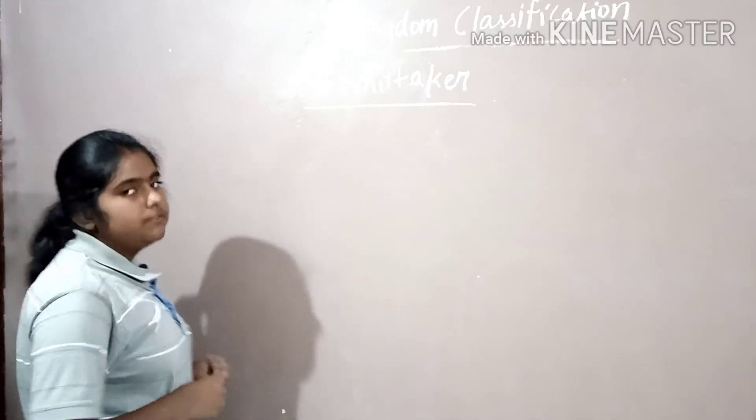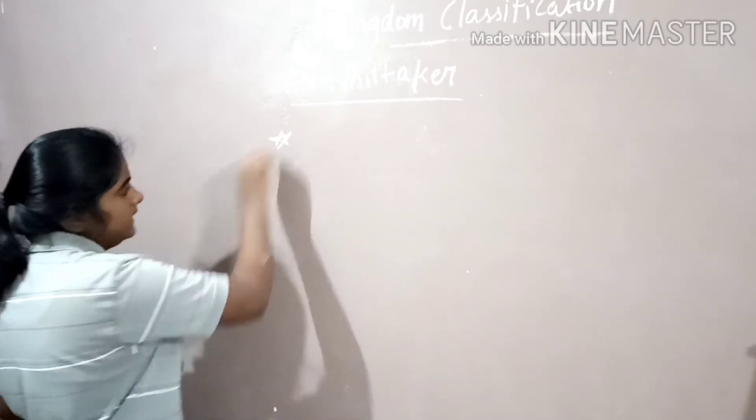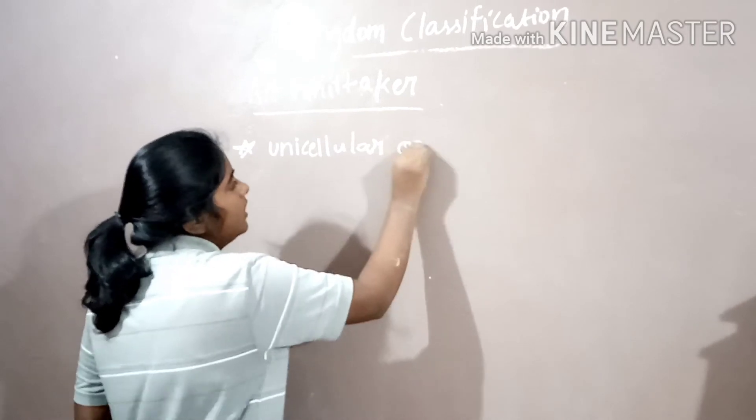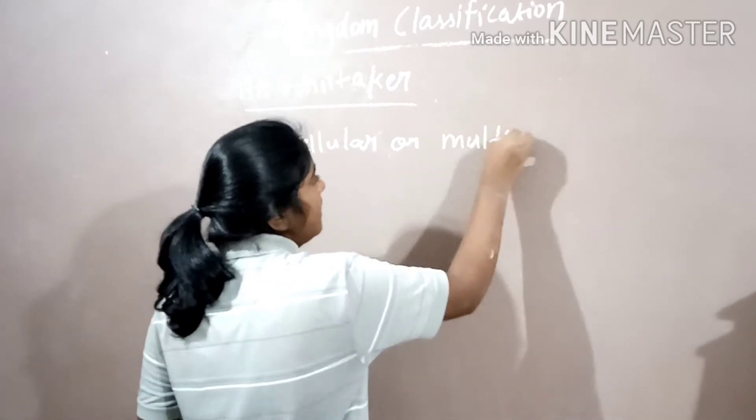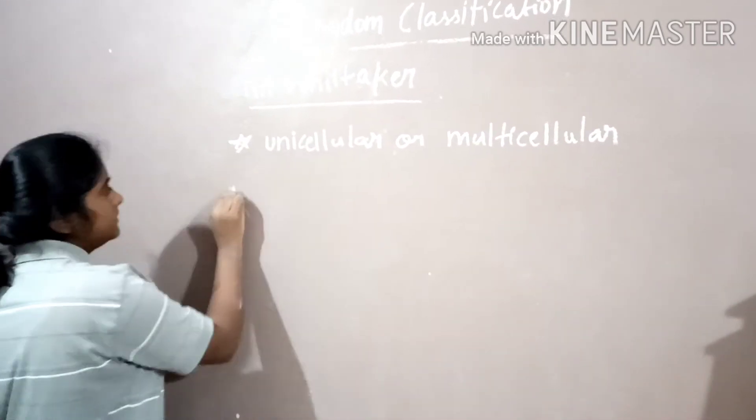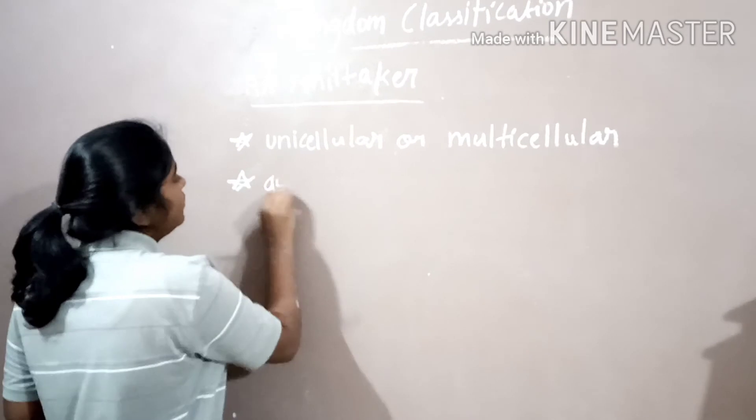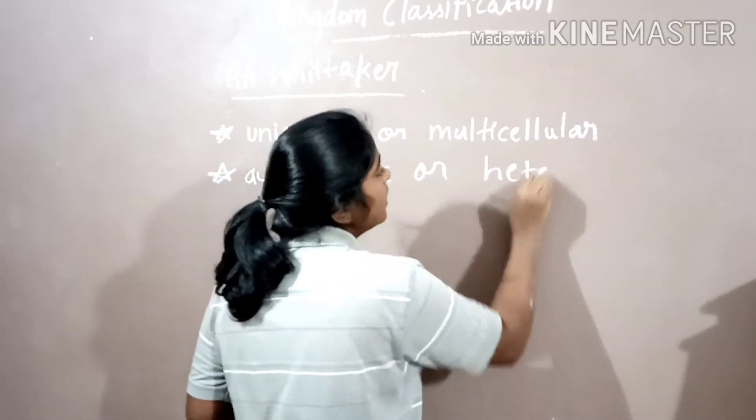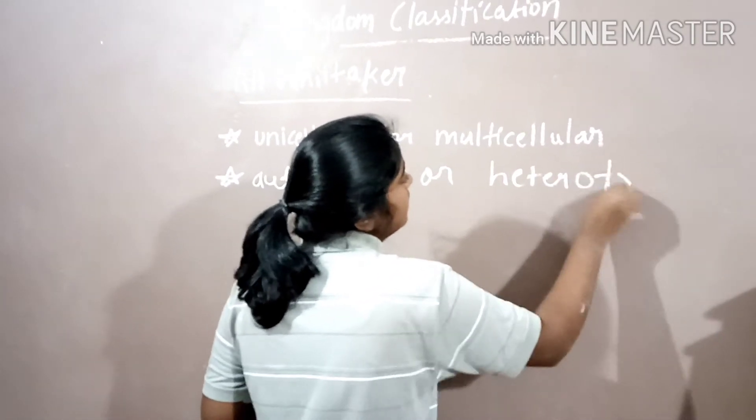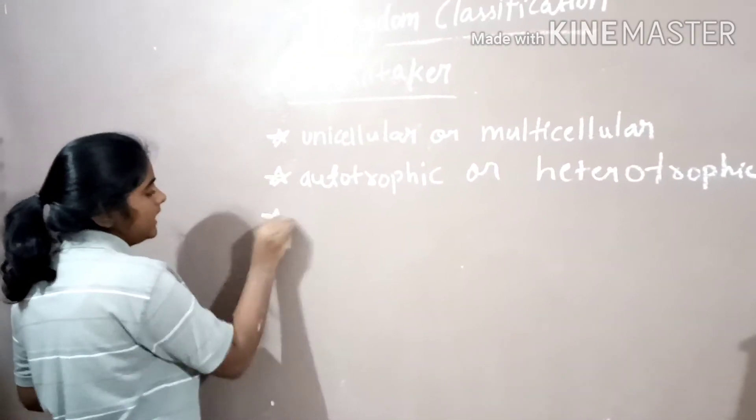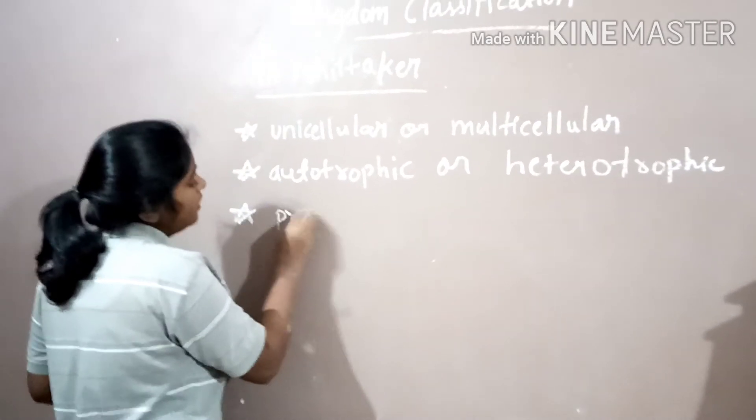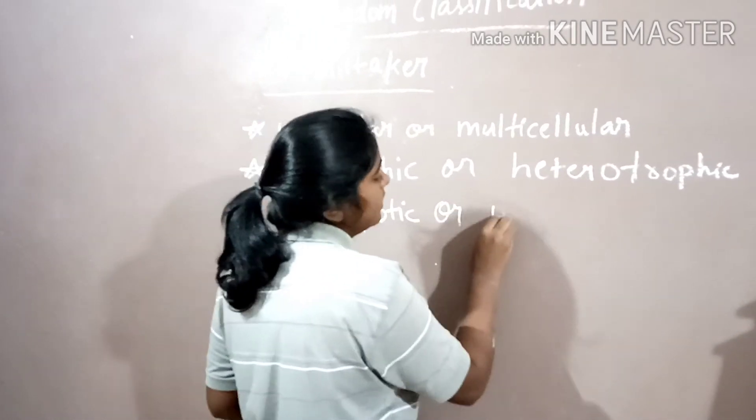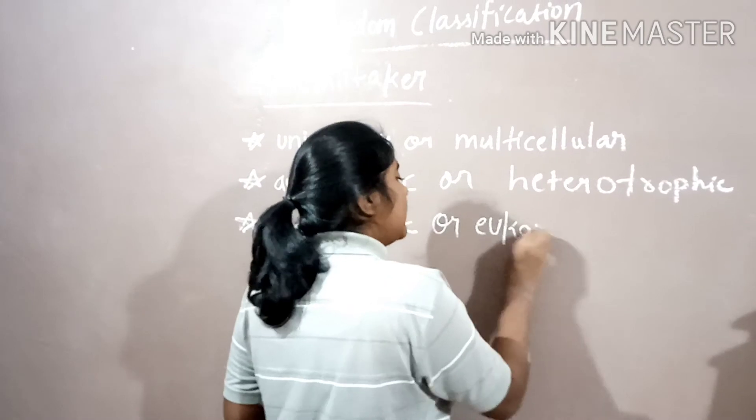R.H. Whittaker proposed the five kingdom classification based on the following criteria. First, unicellular or multicellular. Second, autotrophic or heterotrophic. And the last criteria is prokaryotic or eukaryotic.